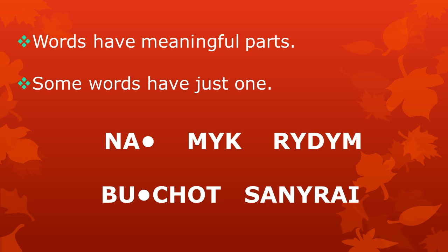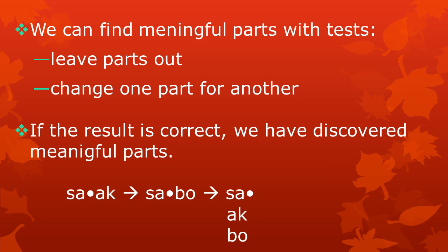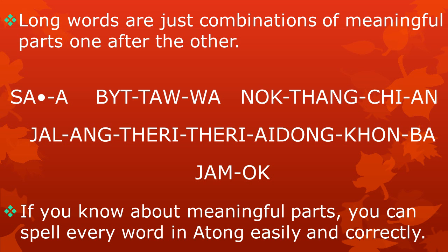In this lesson, we have learned that words have meaningful parts. Some words have just one, and some words have more than one. We find the meaningful parts in words with tests — we can try to leave out one part, or change one meaningful part to another, and see what happens. If the result is correct, we have discovered meaningful parts. Long words are just combinations of these meaningful parts one after the other. If you know about meaningful parts, you can spell every word in Atong easily and correctly.